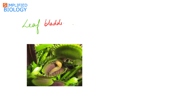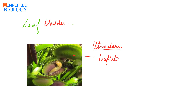Next is leaf bladder, seen in case of Utricularia, commonly known as bladderwort. This too is an insectivorous plant. In this, the leaflets get modified into a bladder-like structure that helps to trap insects, as you can see in the diagram.